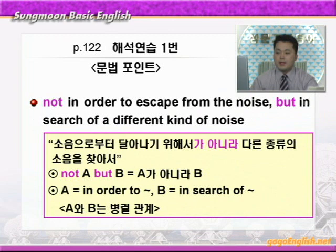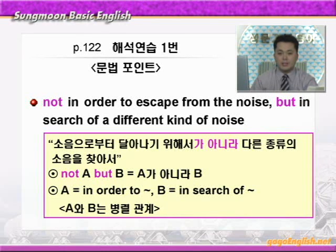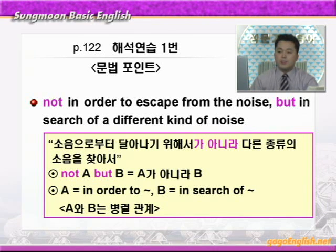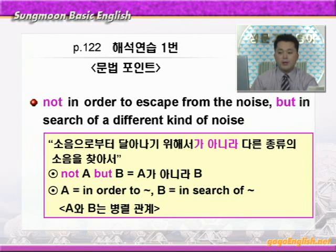바로 문법 포인트로 갑니다. 'not in order to escape from the noise' — 소음으로부터 달아나기 위해서가 아니라, 'but in search of a different kind of noise' — 다른 종류의 소음을 찾아서. not A but B 하면 A가 아니라 B 이런 뜻이죠. 여기서 보면 A에는 in order to 뭐뭐, B에는 in search of 뭐뭐 이런 식으로 전치사구가 각각 들어갔습니다. not A but B에서 A와 B는 병렬관계이기 때문에 문법적으로 같은 형식의 구문이 들어가야 합니다.